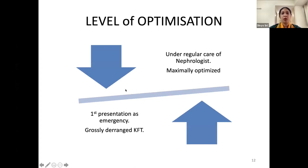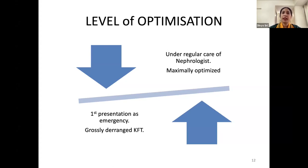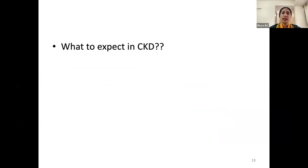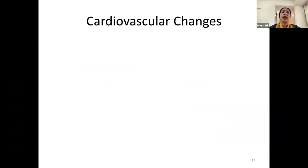Regarding the level of optimization: if the patient is under the regular care of a nephrologist, following orders, and undergoing dialysis as advised, the patient is considered maximally optimized. However, if such a patient presents to us in an emergency, was lost to follow-up, or has missed dialysis sessions, the electrolytes would be deranged, the patient may be in acidosis with grossly deranged kidney function tests — representing the least optimized state.